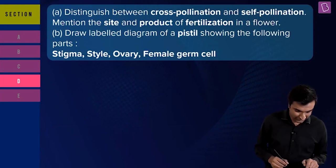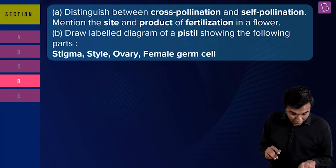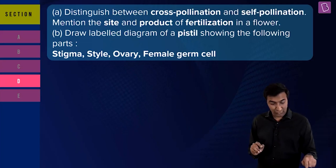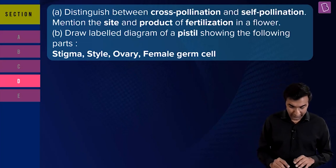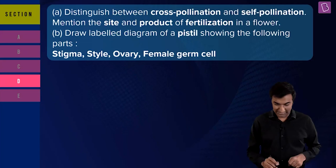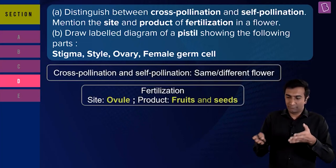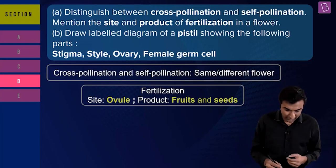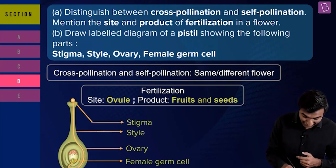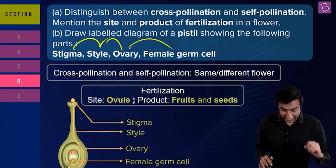Here's the big one — a five-marker, Section D on biology. Take your time: 8 to 10 minutes. 'Distinguish between cross-pollination and self-pollination. Mention the site and product of fertilization in a flower. Draw a labelled diagram of a pistil showing stigma, style, ovary, and female germ cell.' Self-pollination needs both male and female reproductive parts in the same flower; cross-pollination involves a different flower. Make sure you're good with the diagram and know what happens at each part — this becomes a five-marker through those parts.